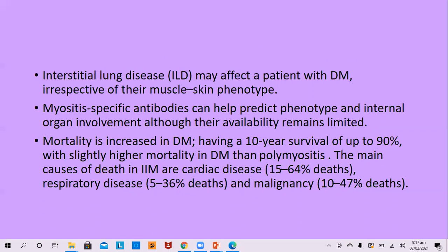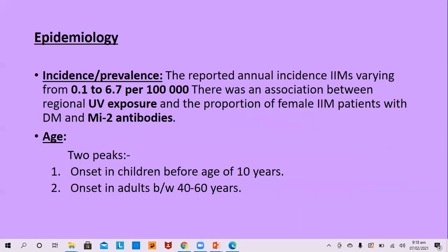Mortality is increased in dermatomyositis and is slightly higher compared to polymyositis. The 10-year survival is in the range of 90%. The main causes of mortality in inflammatory myopathies are cardiac disease, respiratory disease, and malignancy. Several epidemiological studies show an incidence between 0.1 to 6.7 per 100,000.